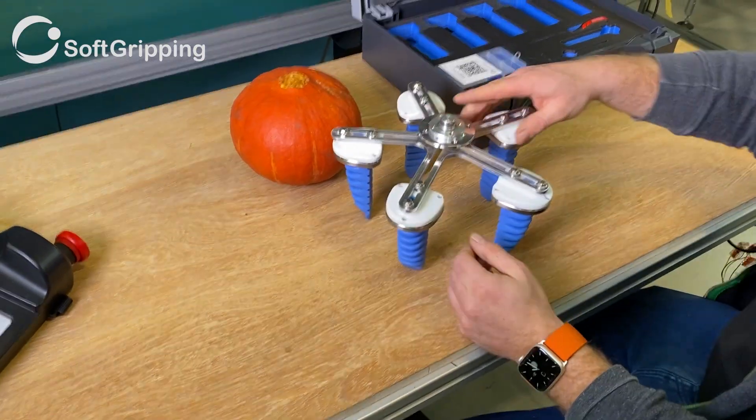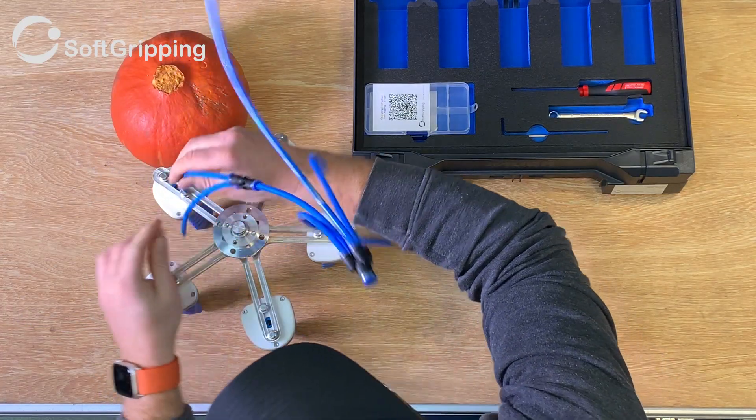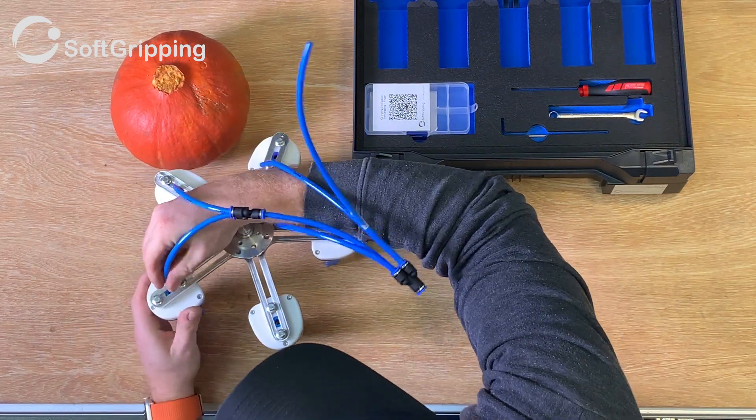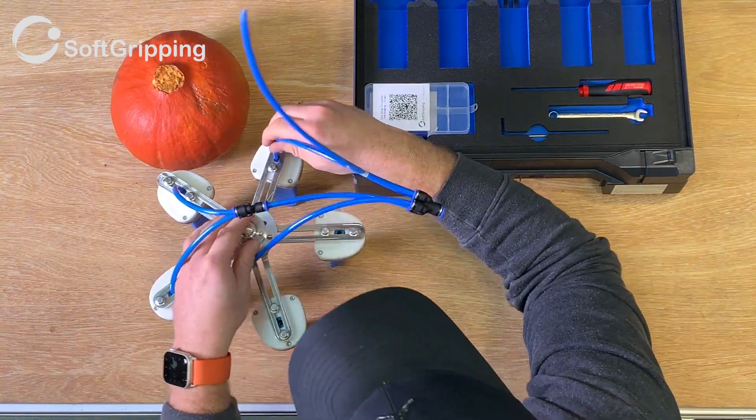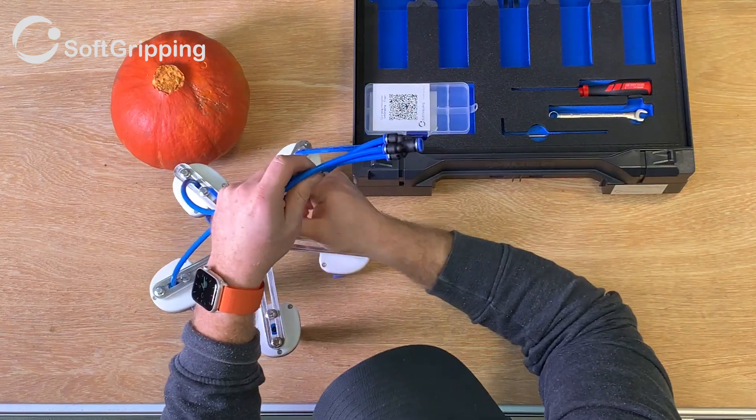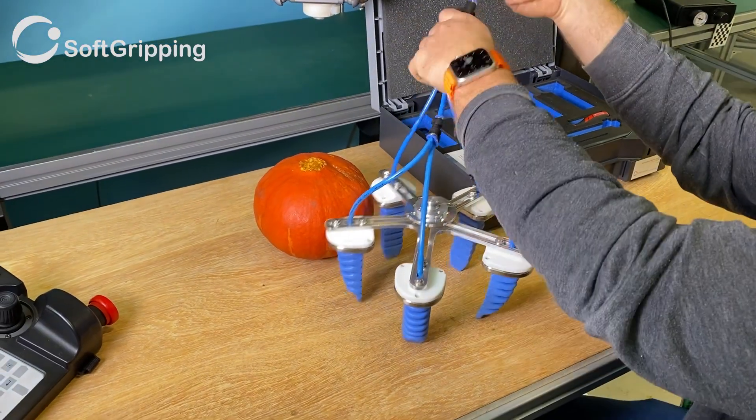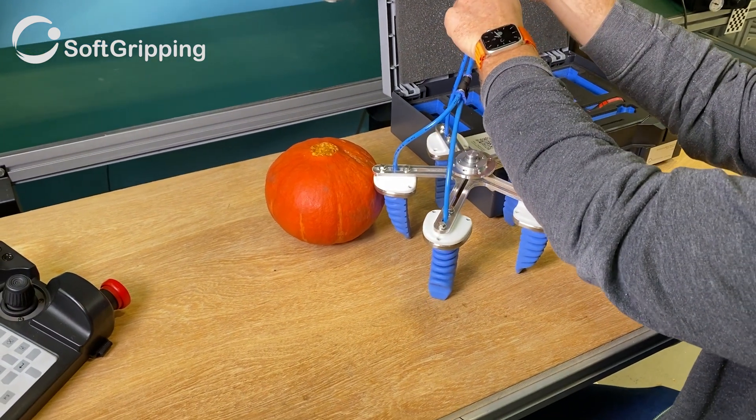Our fingers are pneumatically actuated. Compressed air and vacuum must be supplied through hoses. The hoses are connected via the fittings on the top of each finger. Make sure to read the manual to select the air pressure you need for your application.